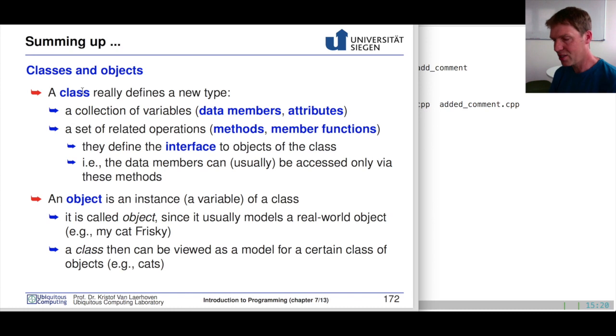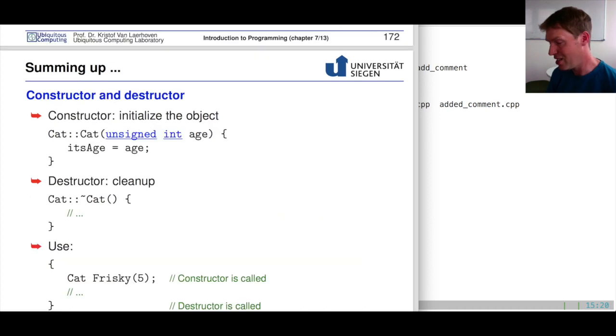Now once you have a class you can basically start creating variables of the type of this class. Just as you have a variable i of type integer, you can then create a variable frisky of type cat, for instance, as we've seen. And this is basically an instance or an object of a class. And we've seen there that we have constructors and destructors that we can use. And these constructors and destructors are automatically called as soon as you create an instance of a class or as soon as this instance is destroyed, for instance by leaving the function where it was constructed. So this wraps up chapter six.